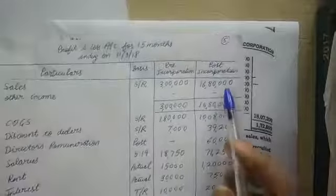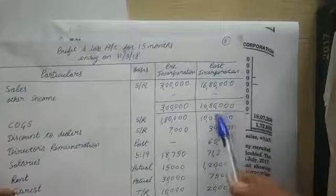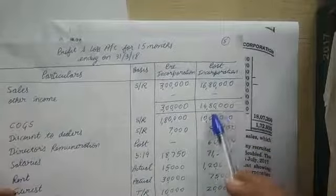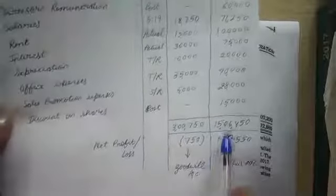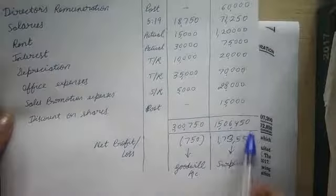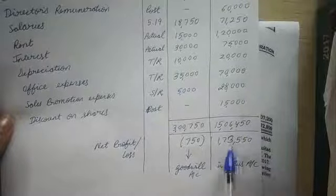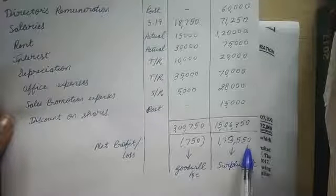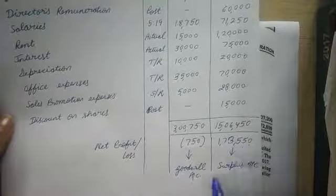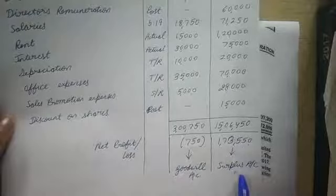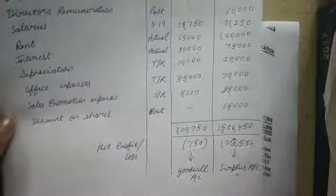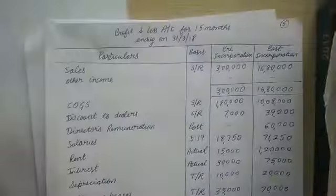In the post-incorporation period, income was ₹16,80,000 and expenses were ₹15,60,450, giving a net profit of ₹1,73,550, which will go into the Surplus account. I hope the question is clear. I am available for doubts.